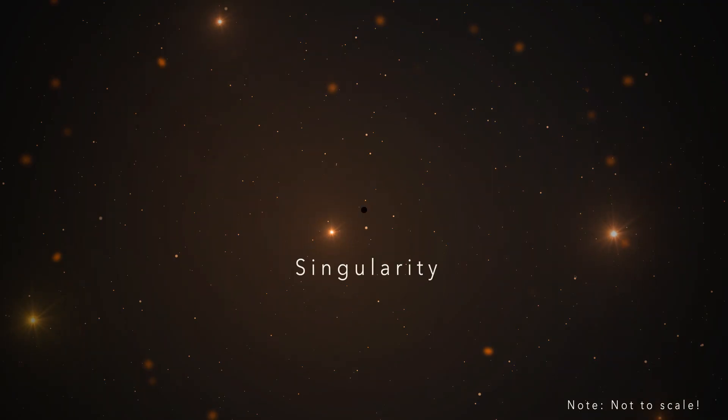Black holes form when stars collapse into themselves, creating an infinitely small and dense point in space-time known as a singularity. The singularity is surrounded by the event horizon.